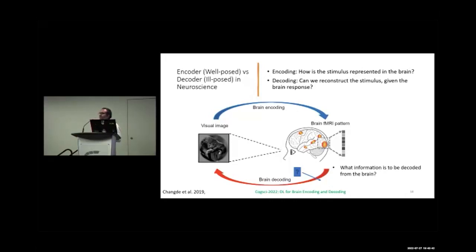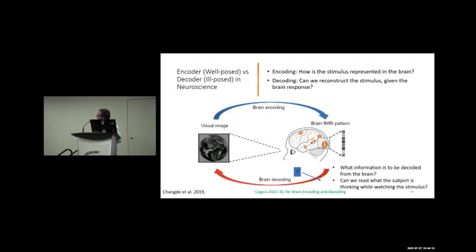What information should be decoded exactly? We don't know what a person is thinking at a particular moment. We want to decode what the person is thinking while involved in a task, but right now we are just decoding the stimulus. Decoding is therefore an ill-posed problem.